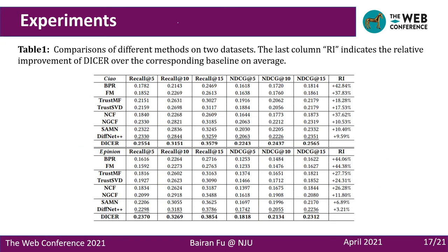The comparison of different methods on two datasets is shown in Table 1. We set K equals 5, 10, and 15 in our experiments to evaluate on different recommendation lengths. From the results, the following observations can be made: first, methods incorporating social information generally perform better than non-social methods — for example, TrustSVD and TrustMF outperform BPR and FM, and SAMN, DiffNet++, and DICER outperform NGCF and NCF, indicating that social information is helpful to improve recommendation performance. Second, our method DICER achieves the best performance on both datasets. The substantial improvement could be attributed to the use of relation-aware GNN to handle high-order social and collaborative similarity relations, and modeling user interests and item attraction based on the deep context, i.e., the graph-enhanced user and item representation.